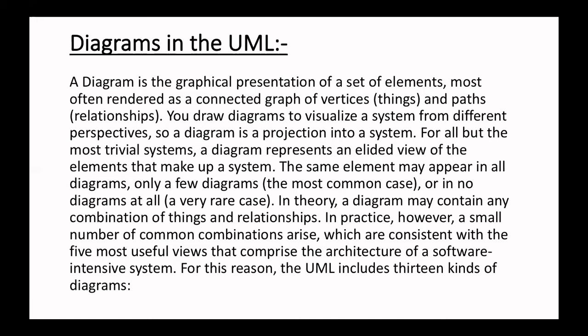The UML includes nine diagrams. A diagram is a graphical presentation of a set of elements, most often used as a connected graph of vertices and paths. In theory, a diagram may contain any combination of things and relationships. In practice, a small number of common combinations arise which are consistent with the five most useful views that comprise the architecture of a software-intensive system. The nine diagrams are: class diagram, object diagram, use case diagram, sequence diagram, collaboration diagram, state diagram, activity diagram, component diagram, and deployment diagram.